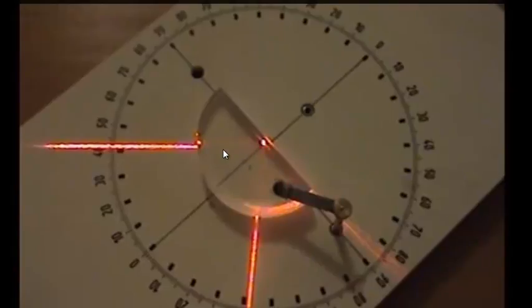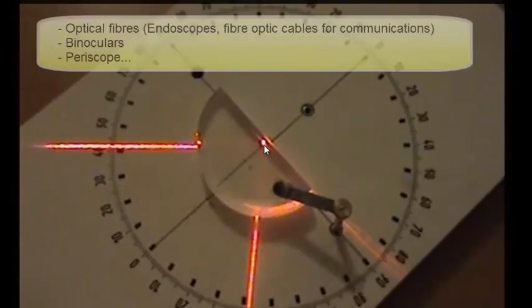If the angle of incidence is increased any more than this critical angle, then we will get total internal reflection and we won't have any of the light being able to escape. It will just be totally reflected at that boundary and this is used in many applications because it's a very high quality reflection from binoculars through to periscopes, any optical device where we need a good reflection.